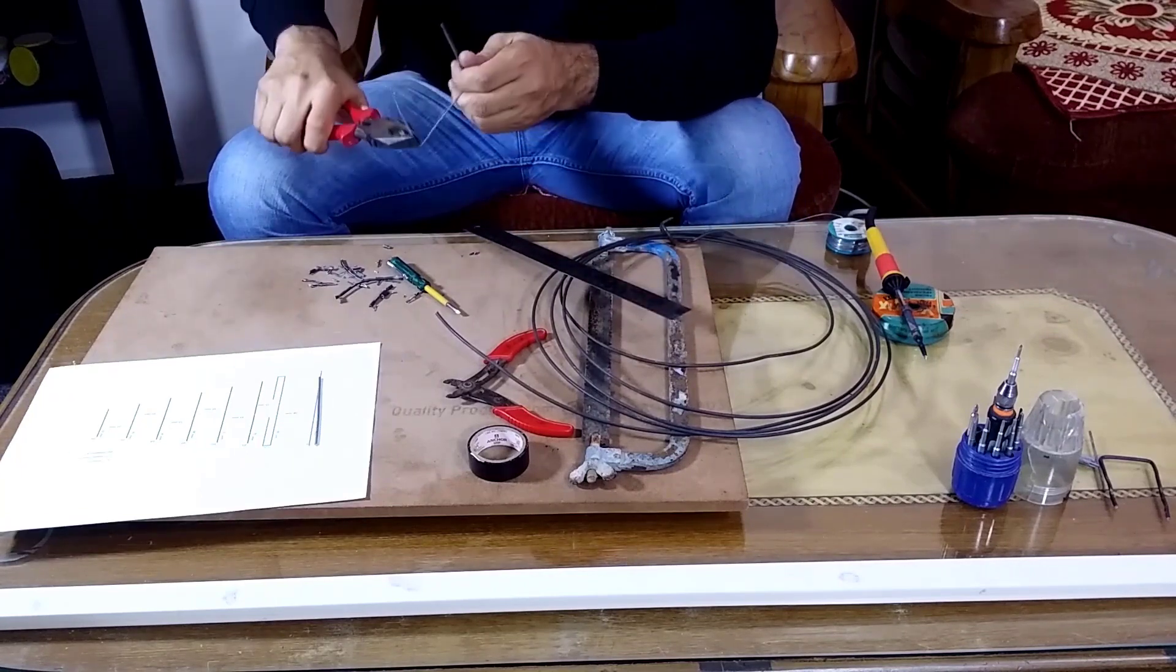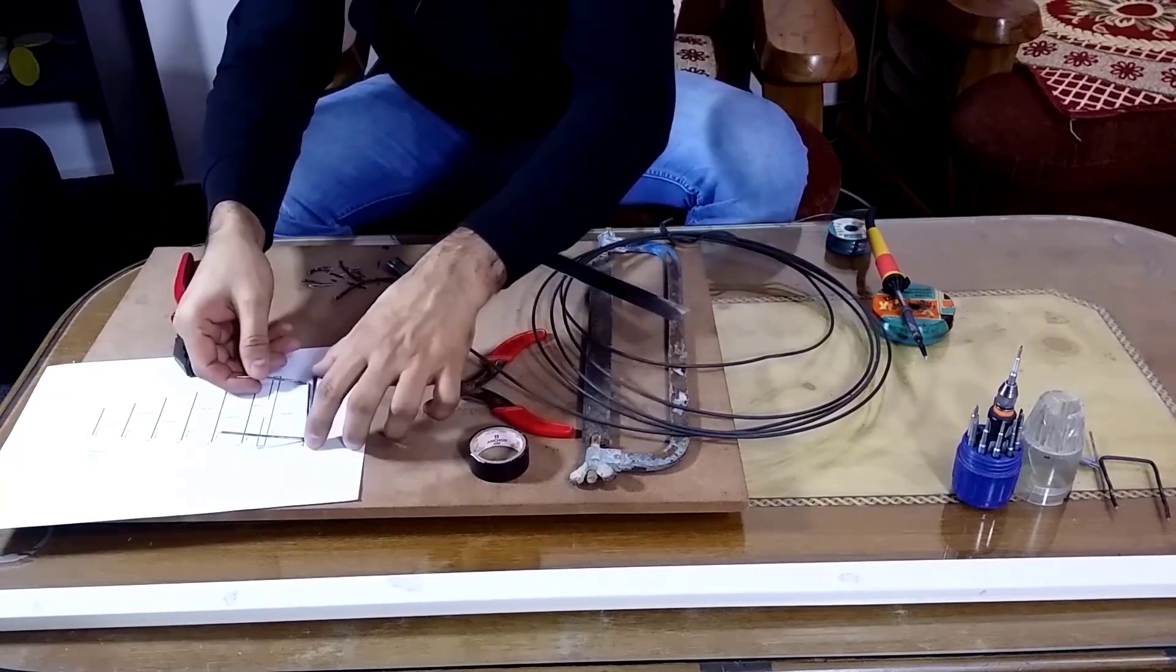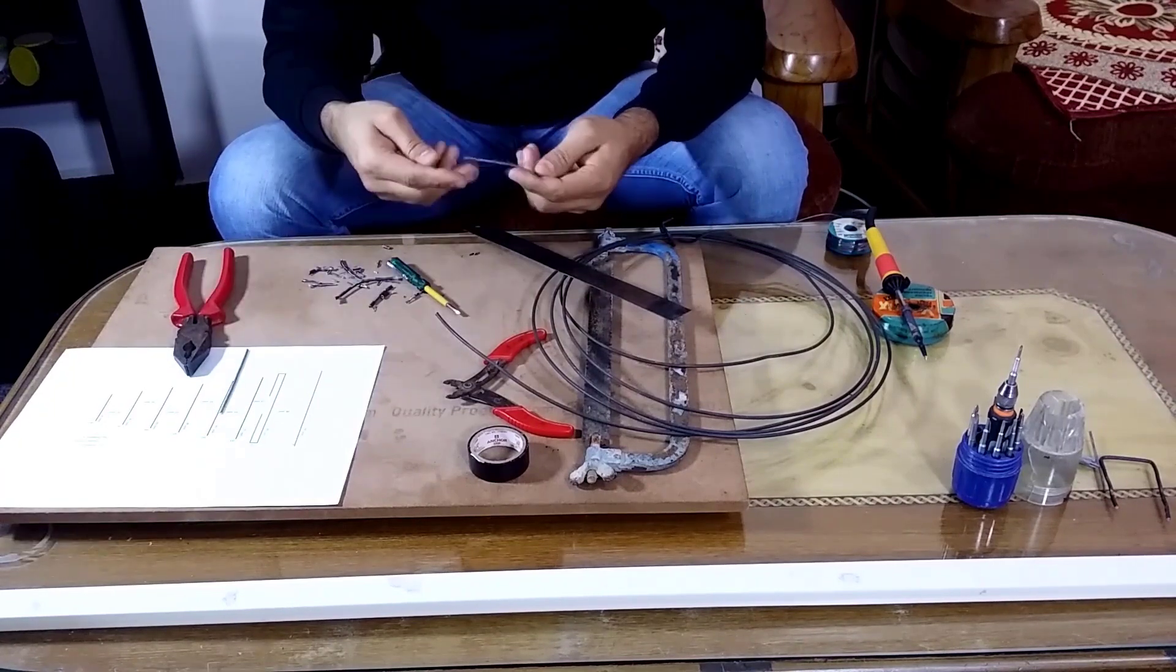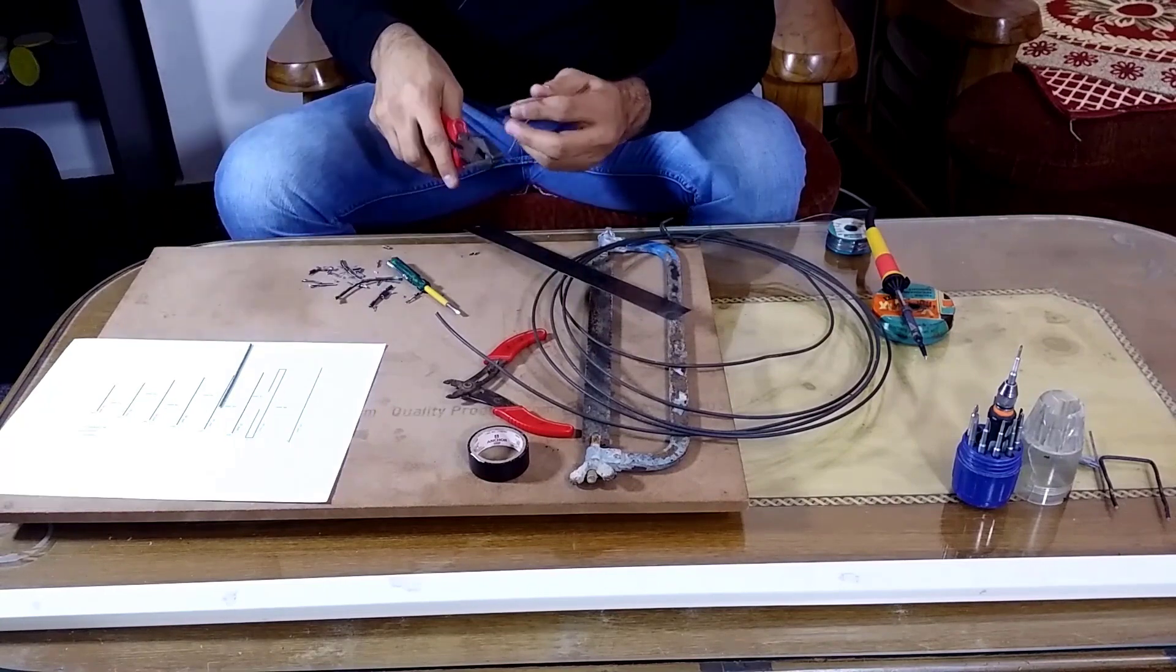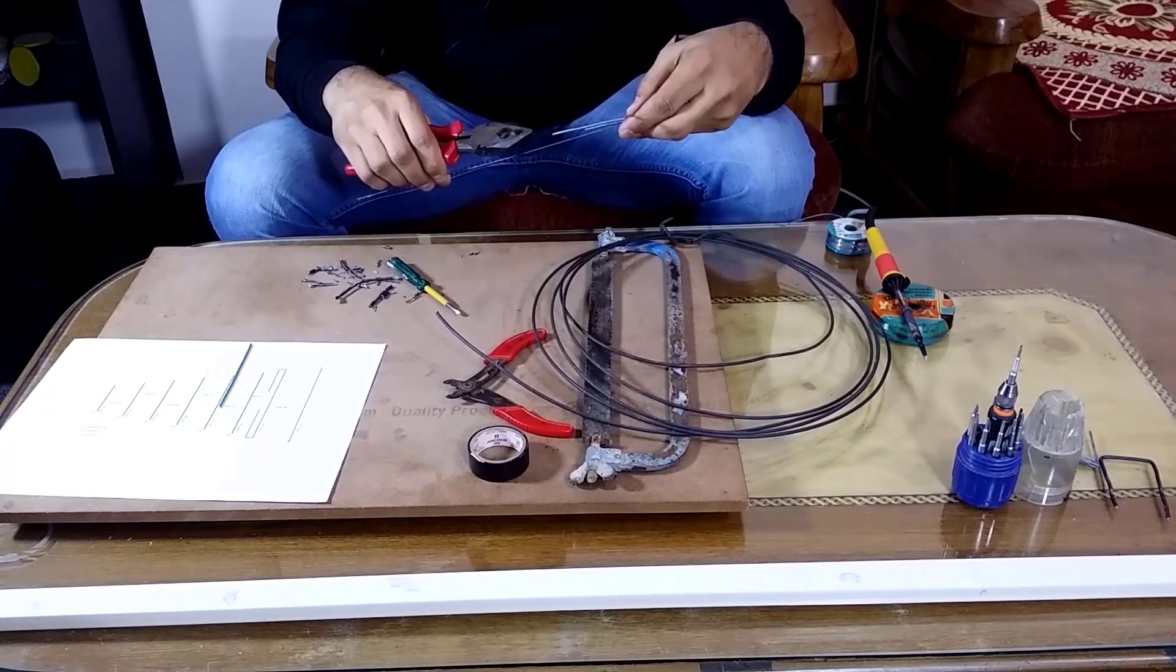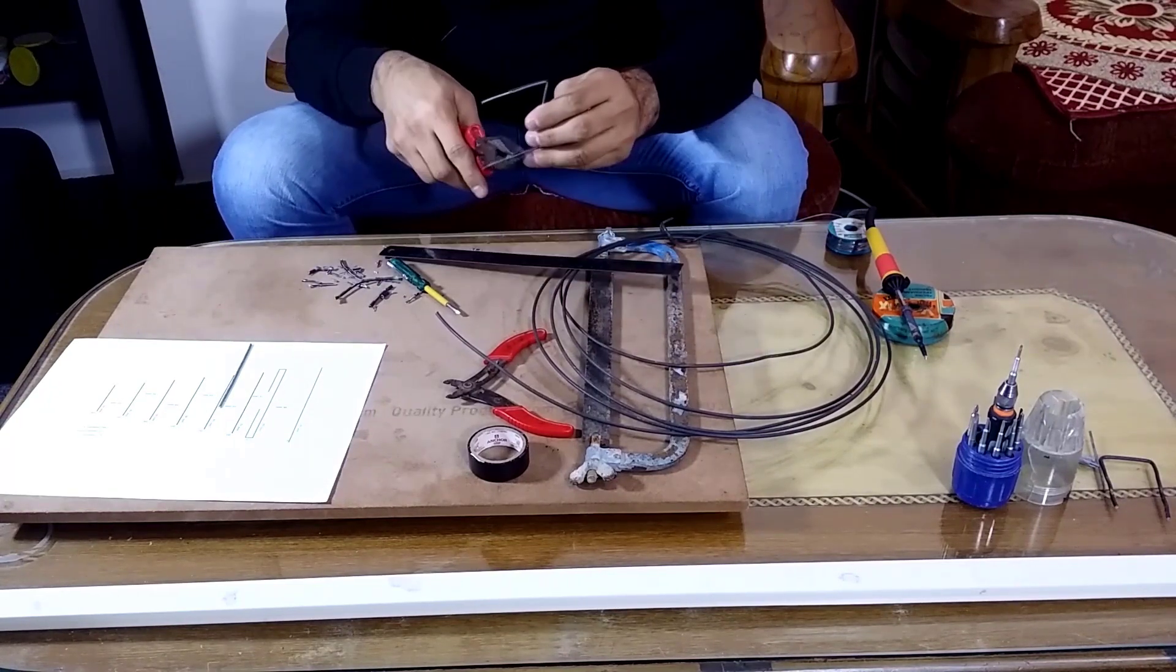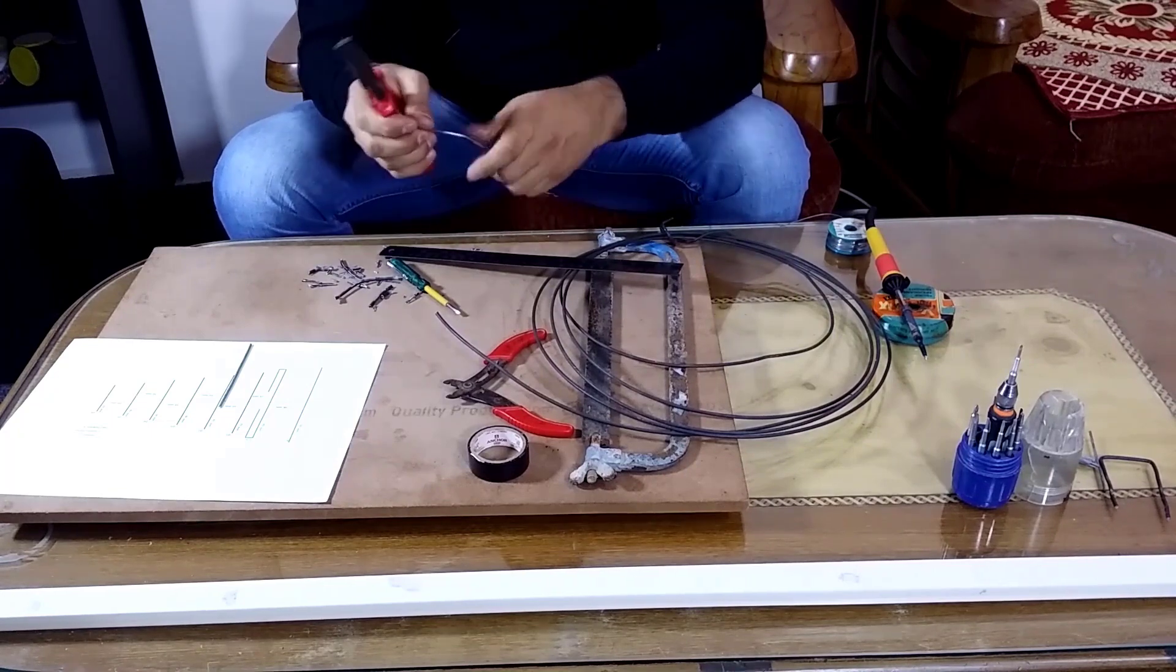One by one cut all the elements required for the antenna from the wire. Make sure that you measure it against the scale. Accuracy is important here because any deviations from the length that are needed will impact the performance and directivity of the antenna.